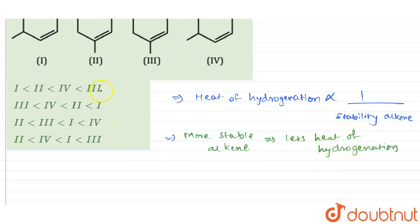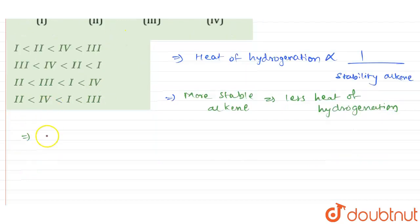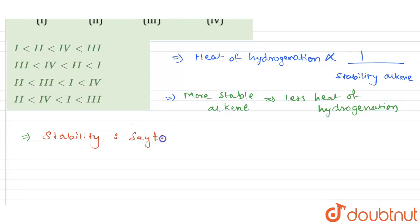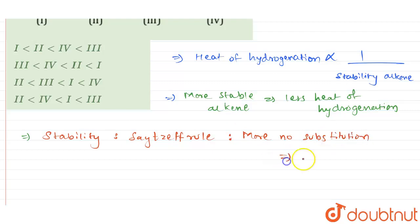We need to find out the heat of hydrogenation order. We can find the stability of the alkenes given using the Saitzeff rule. The Saitzeff rule states that more the number of substitutions, more stable the alkene will be.